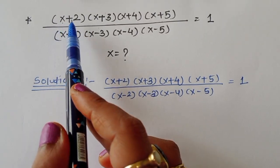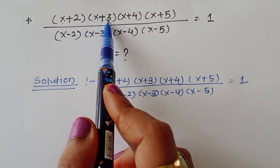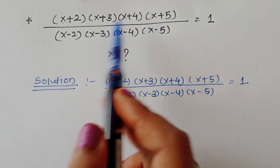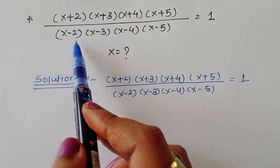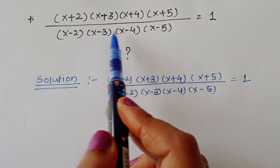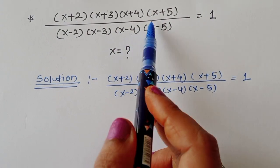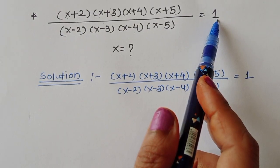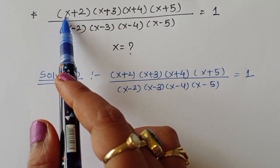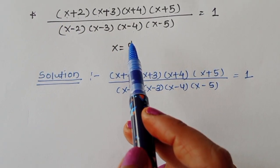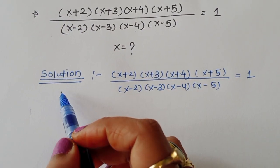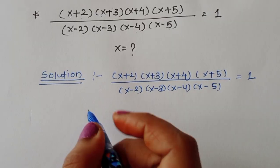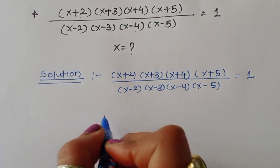The question is: (x+2)(x+3)(x+4)(x+5) divided by (x-2)(x-3)(x-4)(x-5) is equal to 1. We have to find the value of x. Let's see the solution.